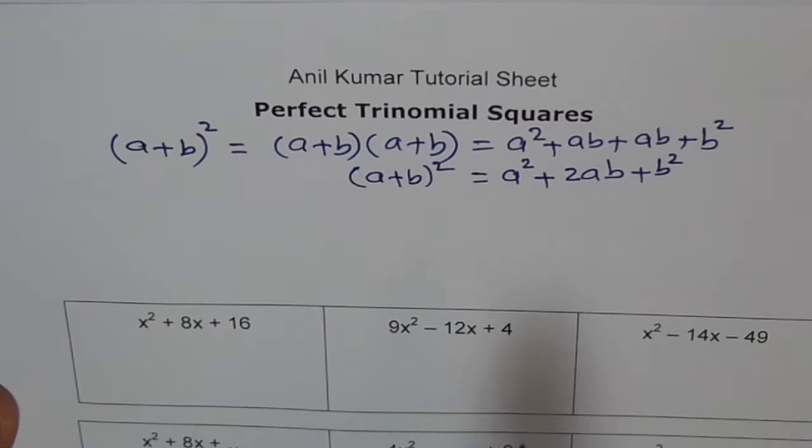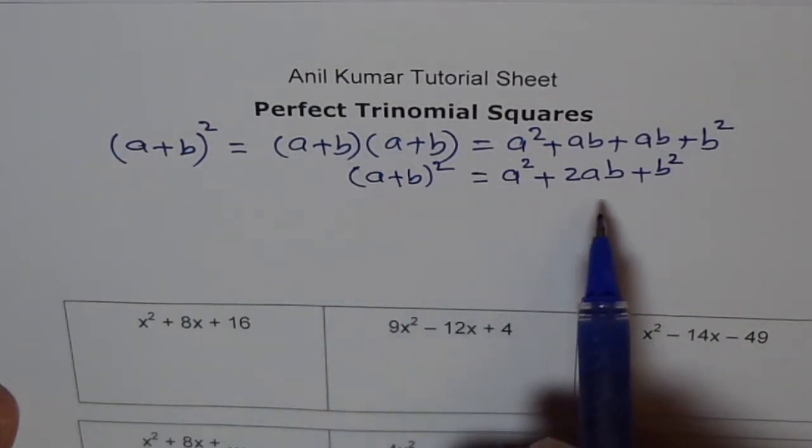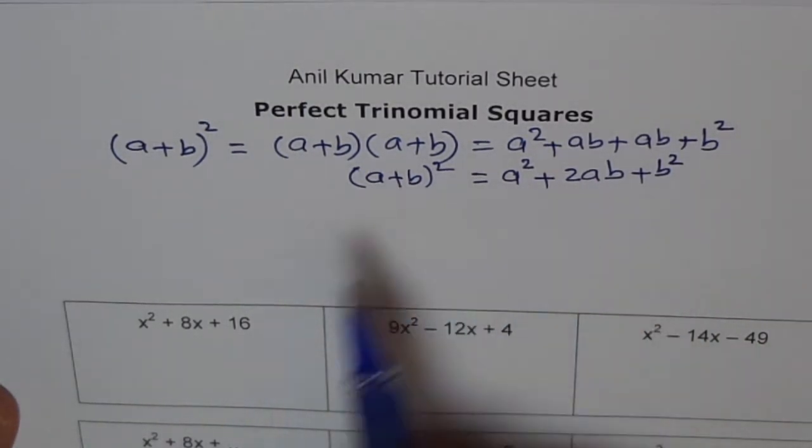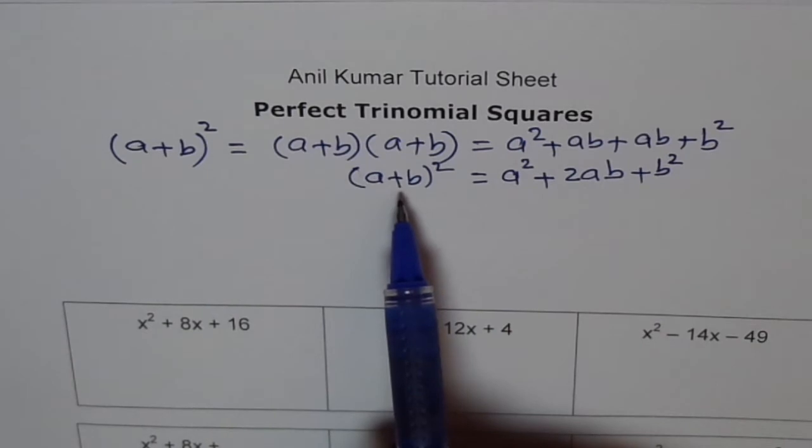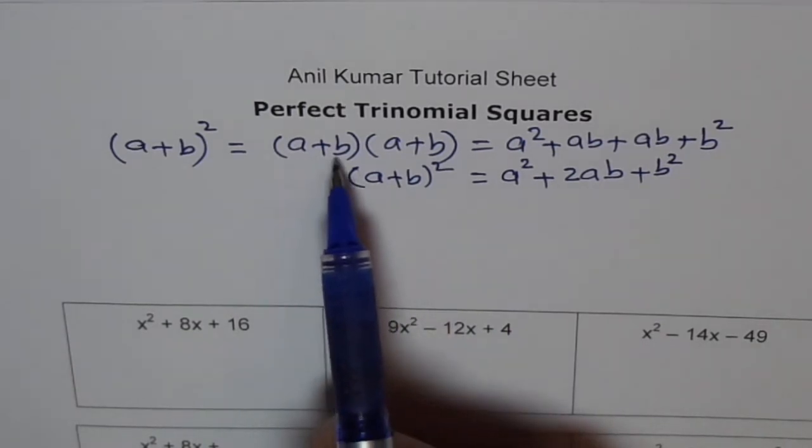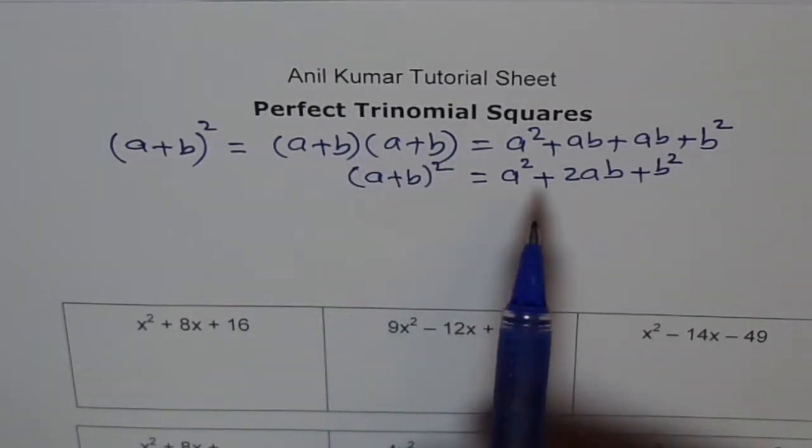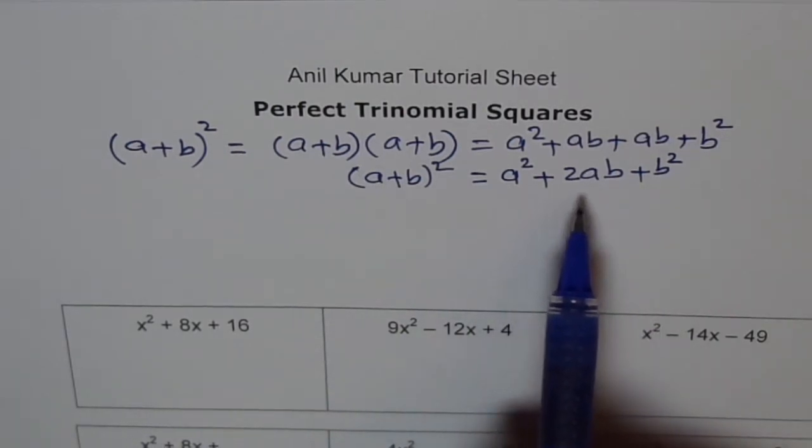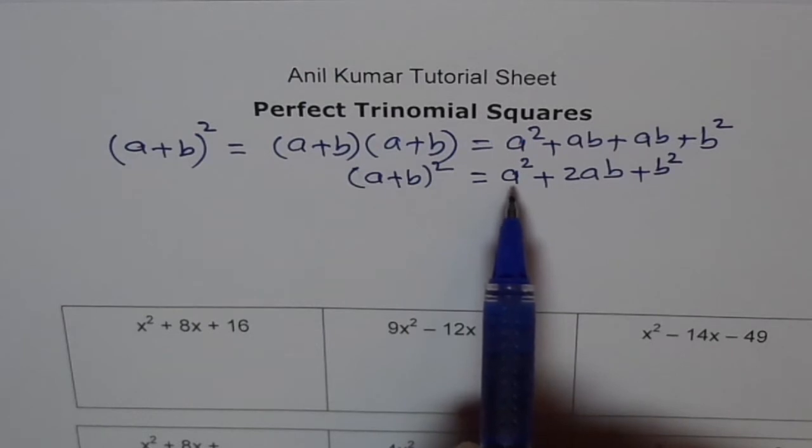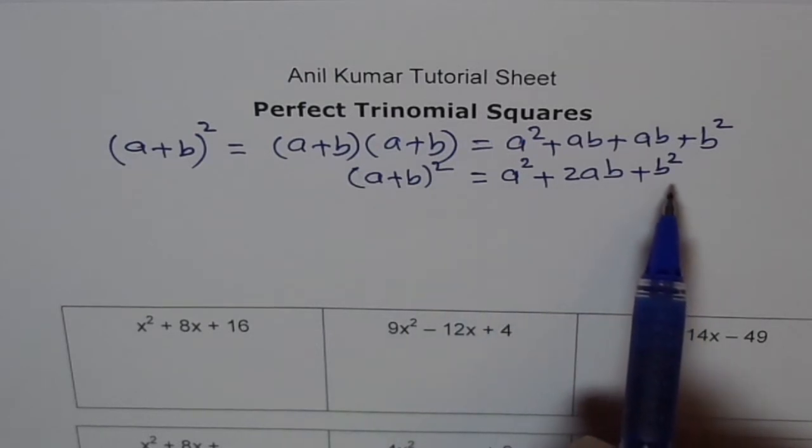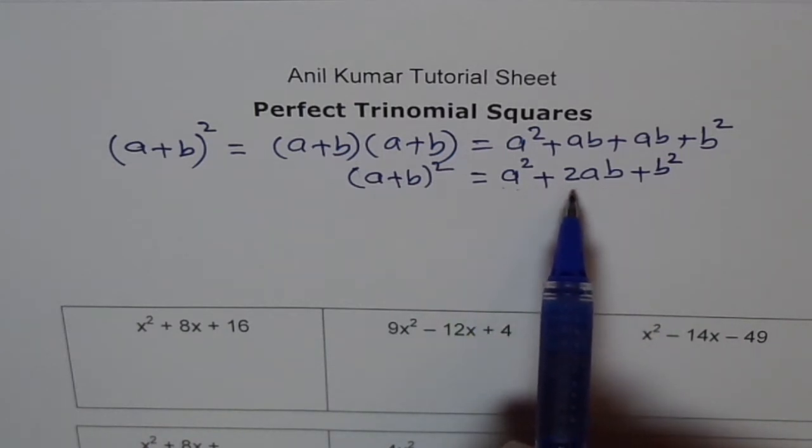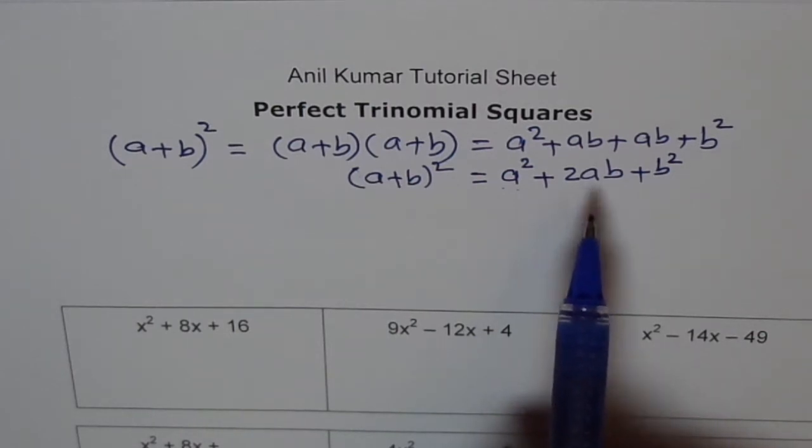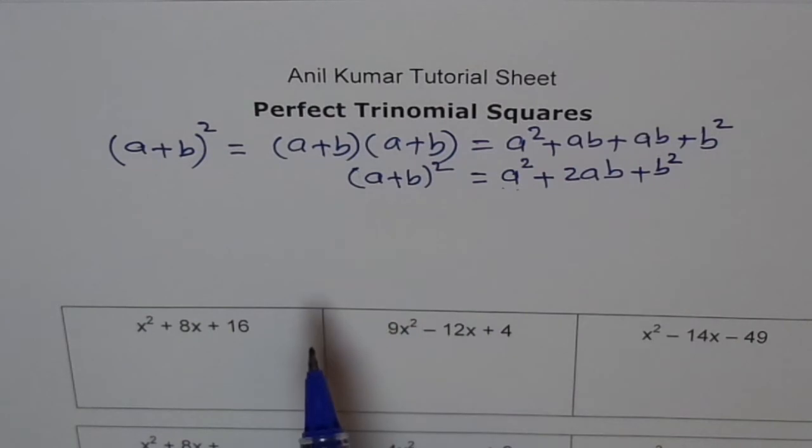That's where we start. Now here, we are trying to do the reverse process because we are doing factoring. In factoring, what do we do? We write the sum form into a product form. This is a product of a plus b times a plus b. So if you get a trinomial which has unique properties, like first term is a perfect square, last term is also a perfect square, and the center term is product of these two times 2, then in that case, very special case, you can factor this term as a plus b whole square.